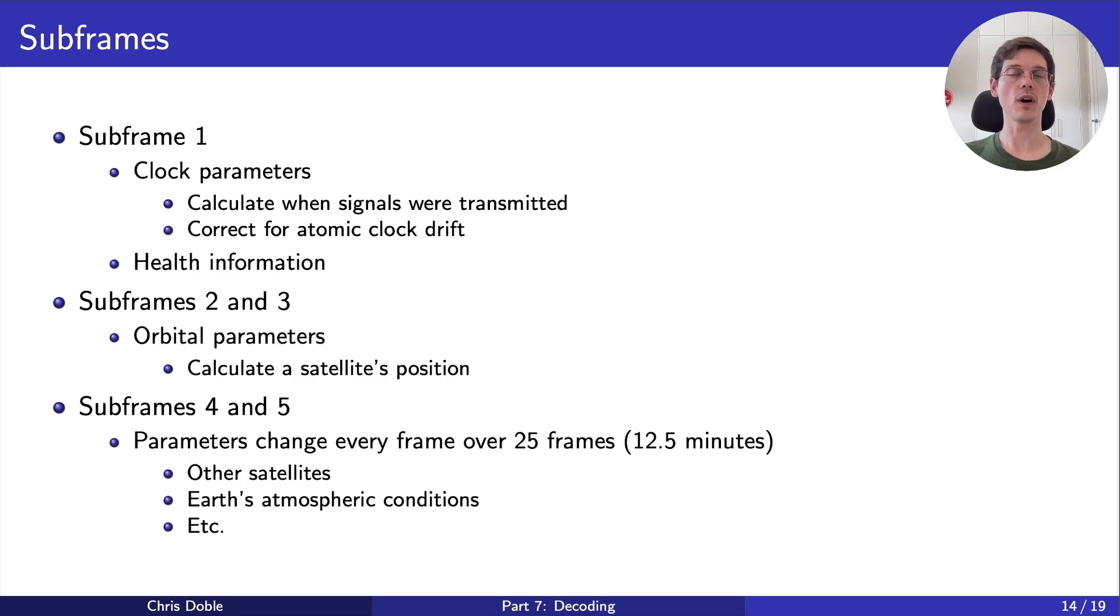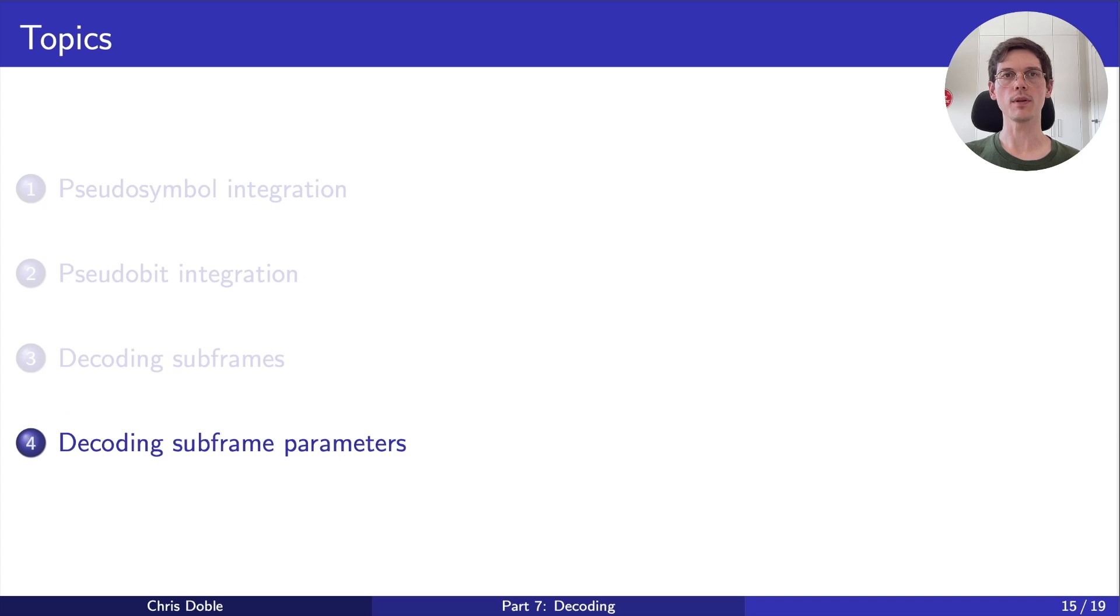So that's an overview of the five different kinds of subframes. But how do we actually decode their parameters? Well, that depends on the parameter. Bits are straightforward. The GPS spec tells you how to interpret them. For example, if the anti-spoof bit is 1, then the military's precision signal is encrypted. Easy enough.